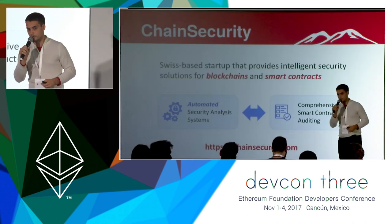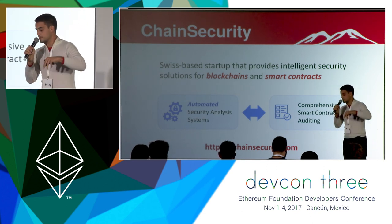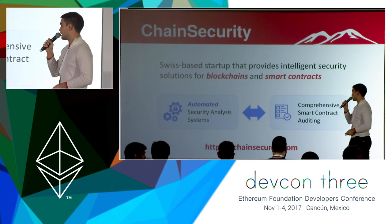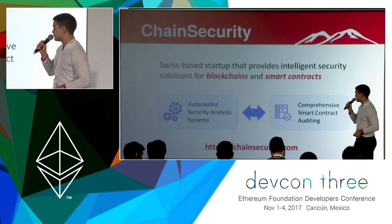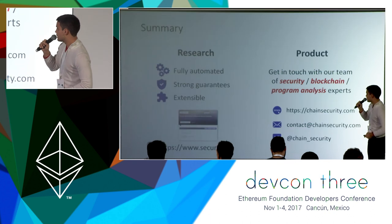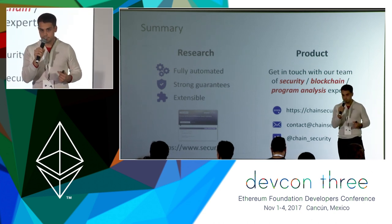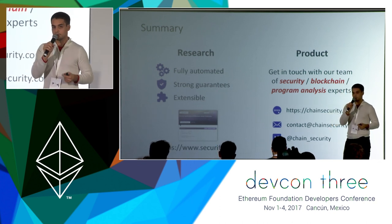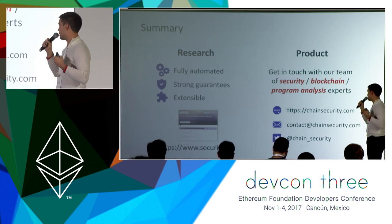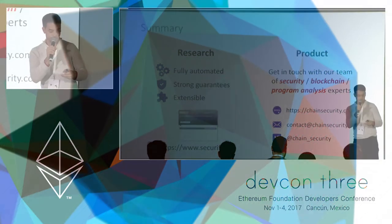Following experience with Securify and automated tools to analyze smart contracts, a startup called Chain Security was created in Switzerland to audit blockchains and smart contracts. The feedback loop between auditing contracts, identifying common patterns, and extracting routine analysis helps develop new tools that improve on the current state of the art. You can check out Chain Security on their website. To summarize: Securify is fully automated, provides strong guarantees — when it tells you a bug doesn't exist, it really doesn't exist — and is extensible via a domain-specific language for creating new patterns.